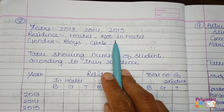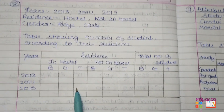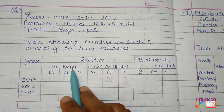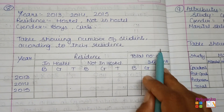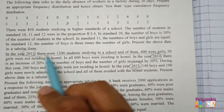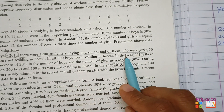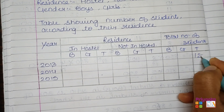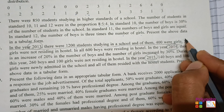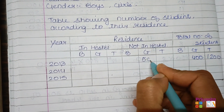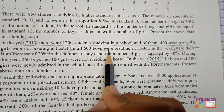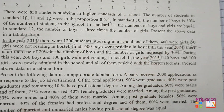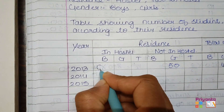Taking first into a book, the table is prepared with year in one column and residing in hostel and not in hostel columns, along with number of boys, girls, and total number of students. For the year 2013, the total number of students is 1200 and of them 400 were girls. 50 girls were not residing in hostel. 600 boys were residing in hostel.